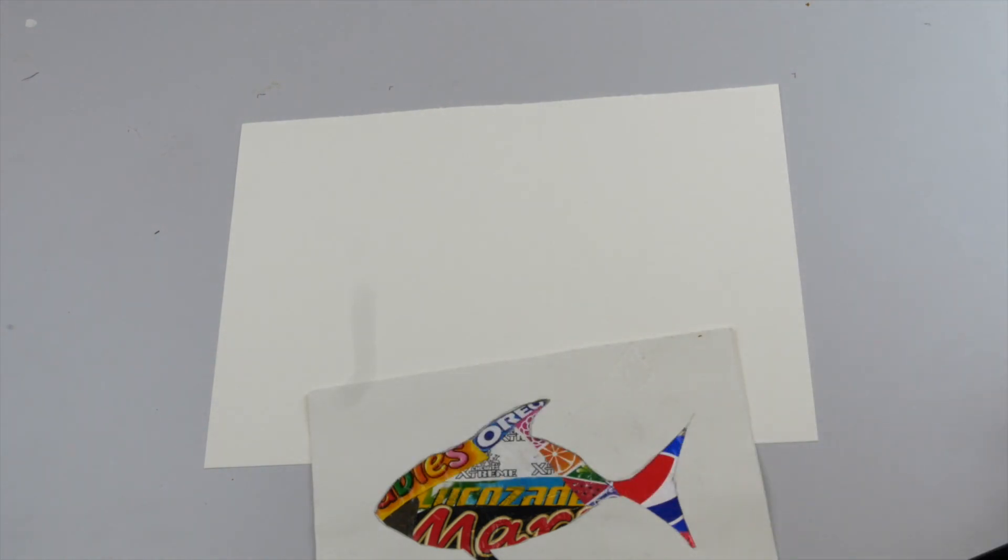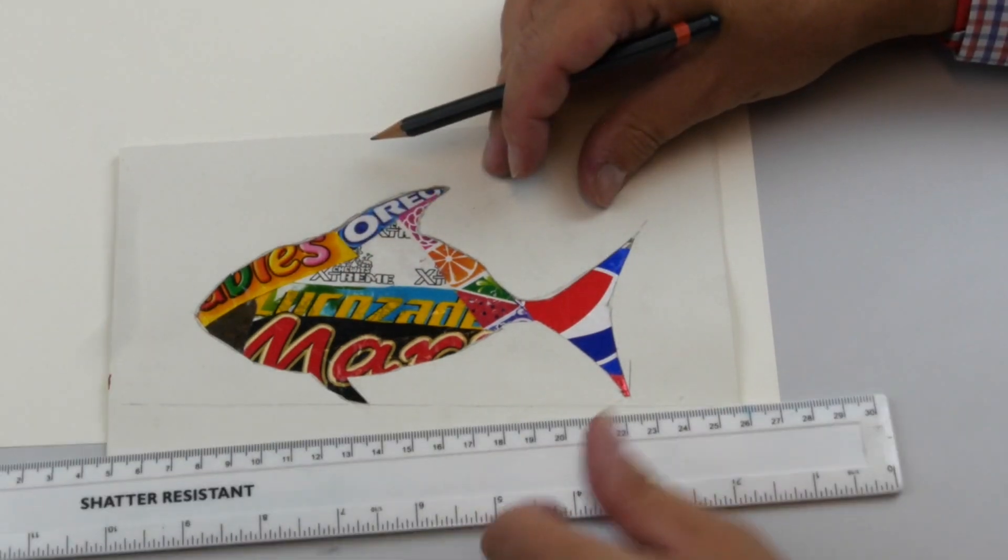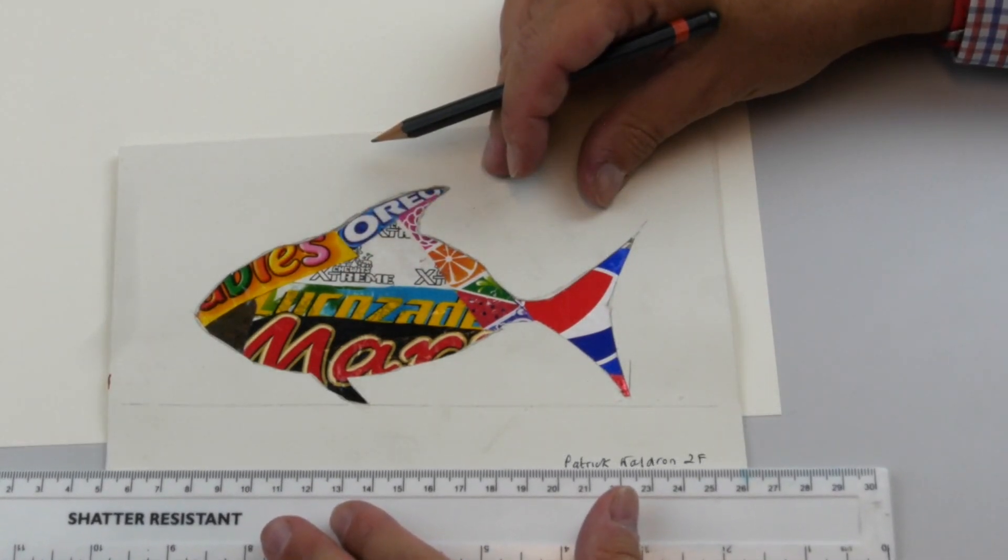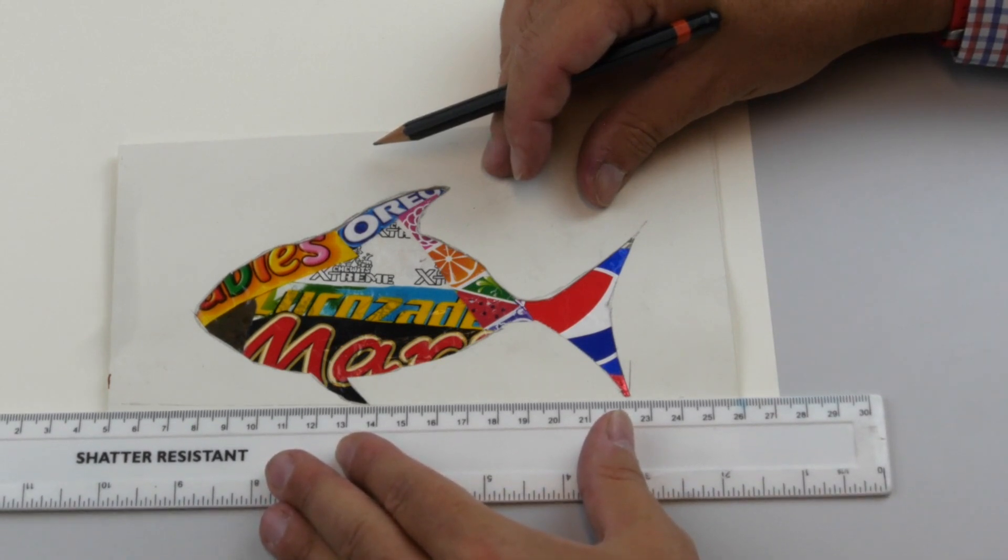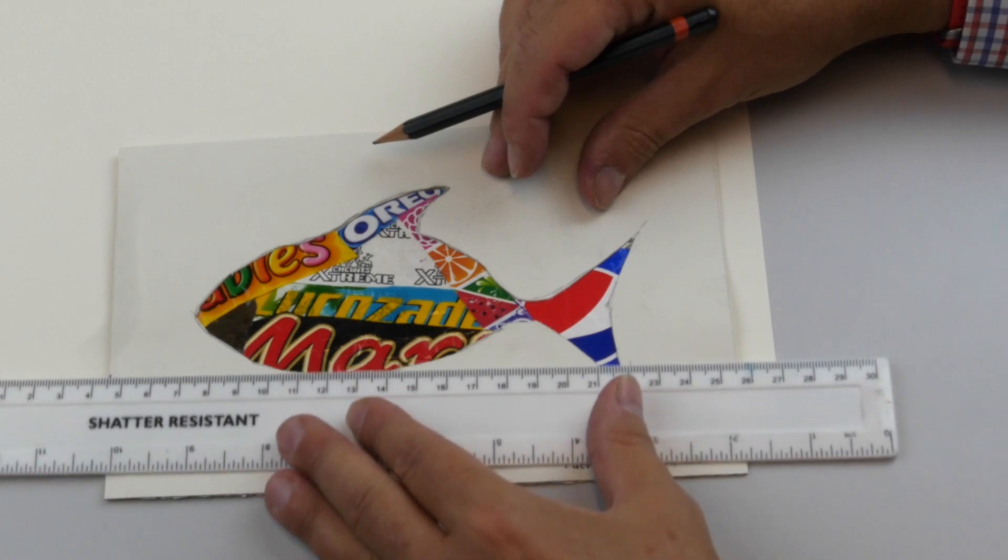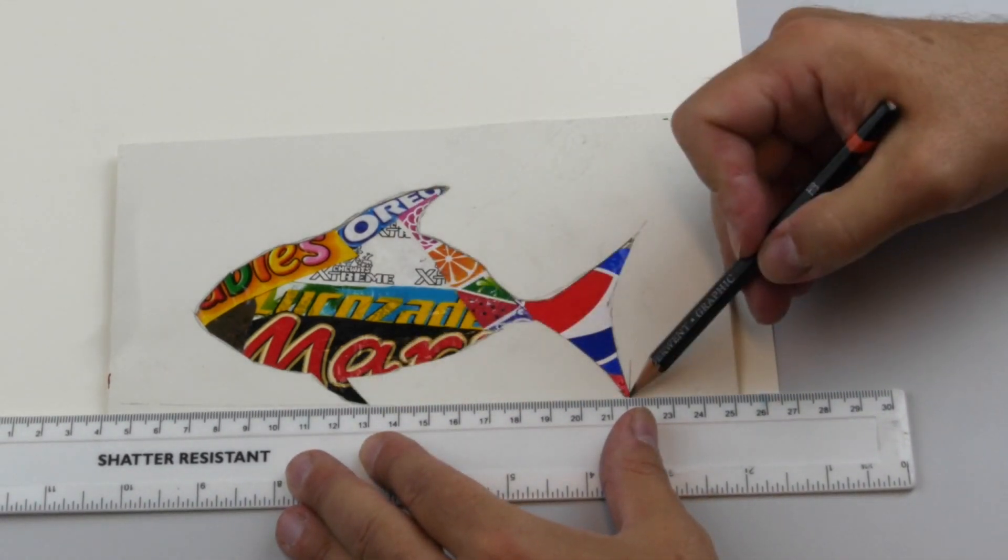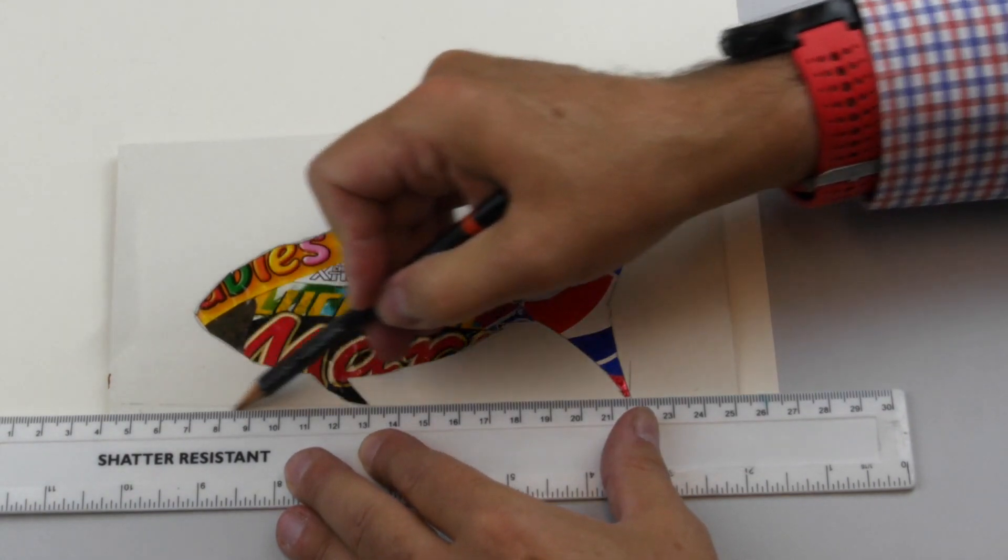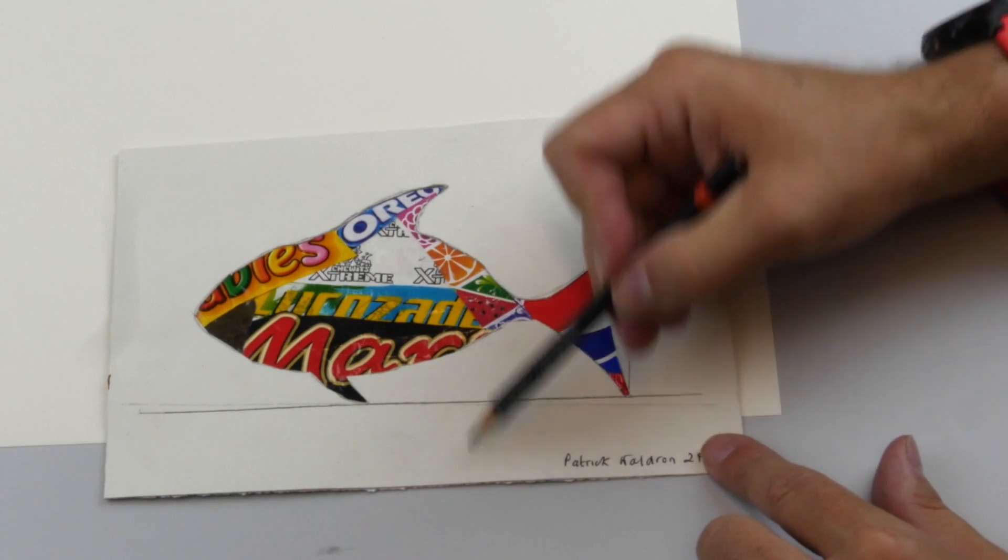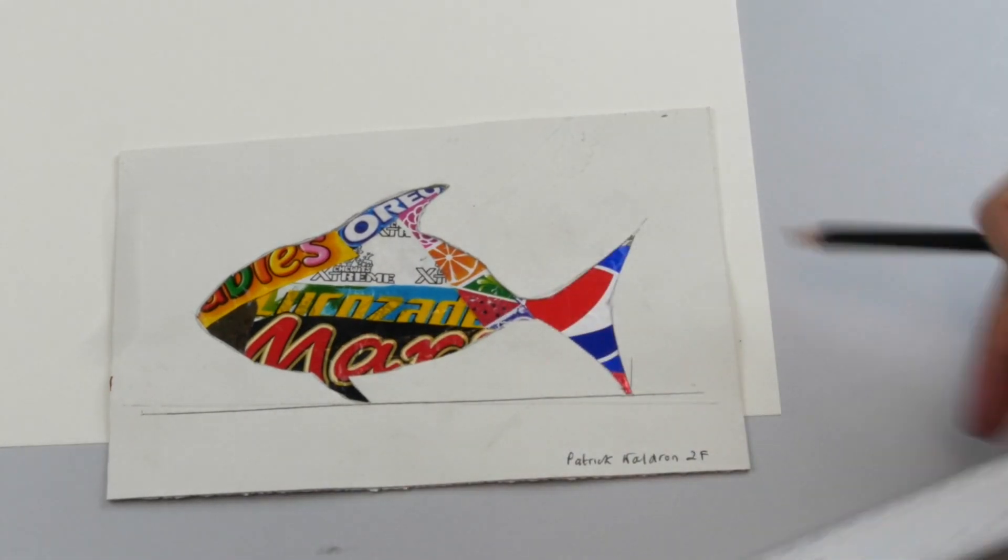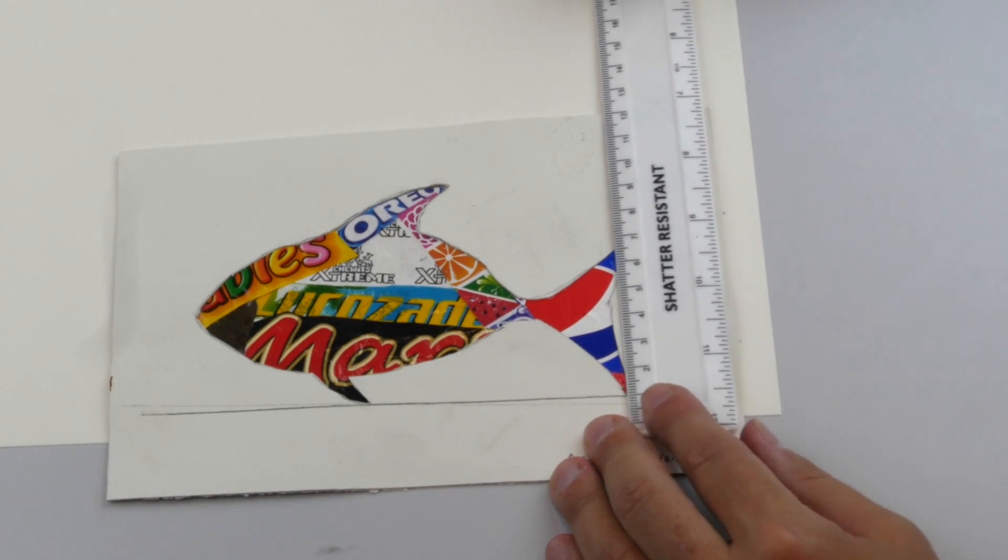You're going to enlarge everything by 1.5. So the first thing we're going to do is find the lowest point. The lowest point here, probably the fin and the tail fin, probably line up about the same level. Make sure the page is pretty horizontal to the bottom of the page.